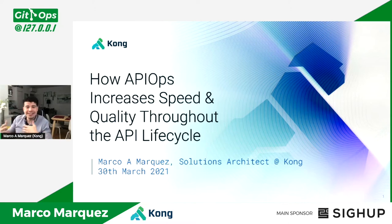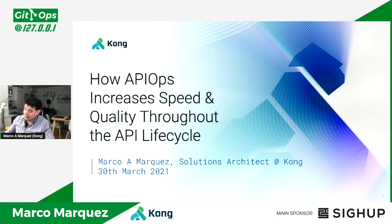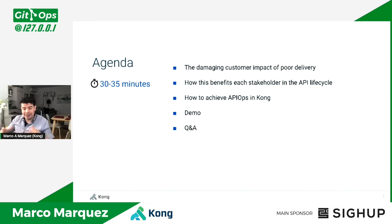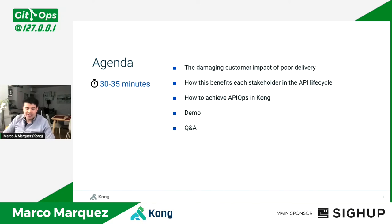I'll first start with the problem — what is it that we're trying to solve — and then show you a quick demo on how we solve this problem. The agenda: we'll start with how we run into problems involving the lack of automation and how automations can help, then the benefits for each stakeholder related to the API lifecycle, how Kong enables it, and finally a quick demonstration. This will be around 30 to 35 minutes, with an additional 10 to 15 minutes for Q&A.